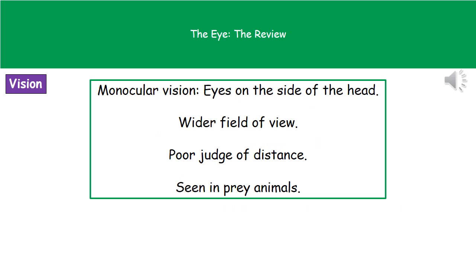The second type is monocular vision, which we see in prey animals. Their eyes are located on the sides of their head, giving them a much wider field of view so they can see a lot more around them — very important for prey, as it means they can spot predators trying to sneak up on them. However, the downside is that they are not very good judges of distance. So as a prey animal you might spot that fox coming, but you may not be able to work out exactly how far away it is.